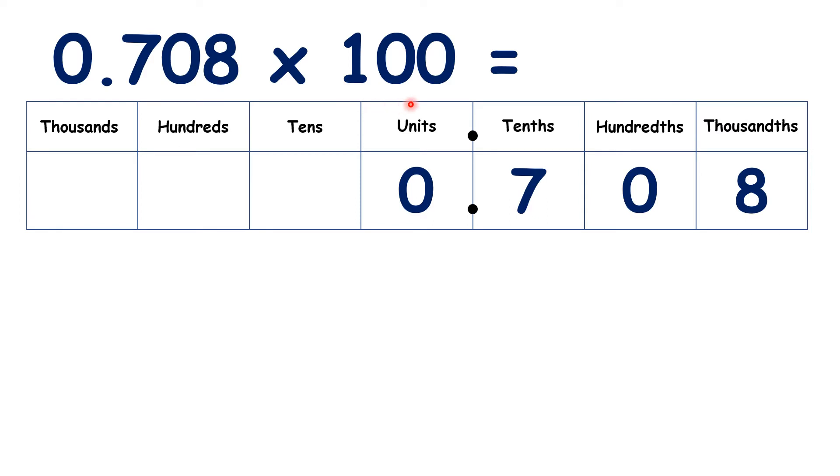For 0.708 times 100, we move the digits two places across, so that's 70.8.